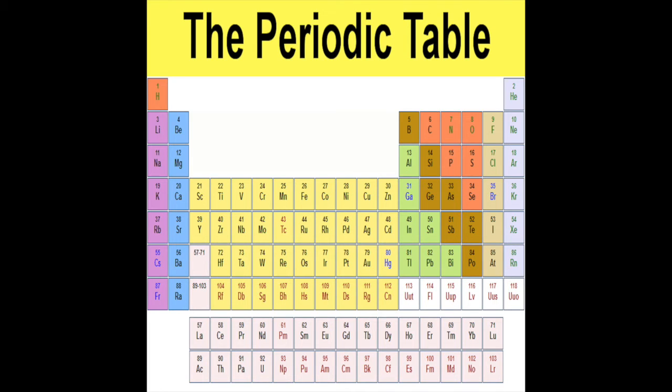Iron is the 26th, then cobalt, nickel coins you get, copper, zinc, and gallium, germanium, and arsenic, selenium, and bromine film, while krypton helps light up your room.